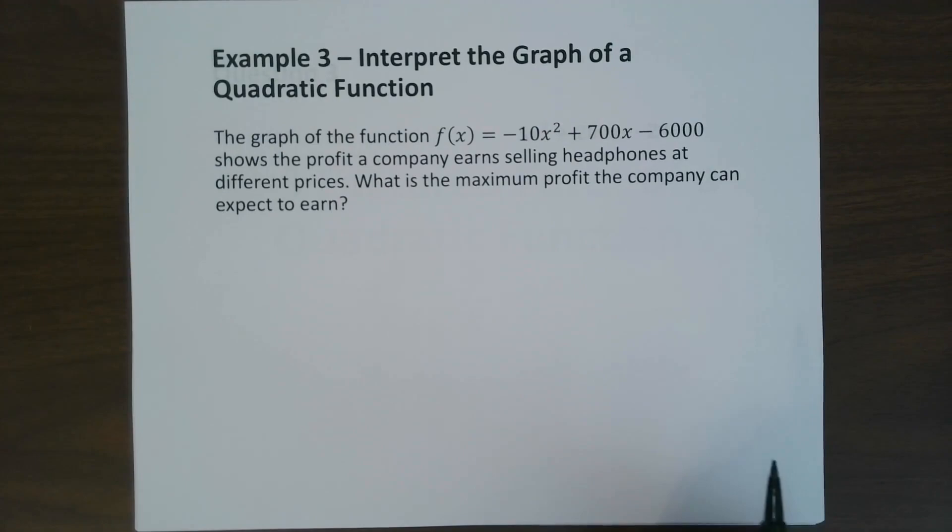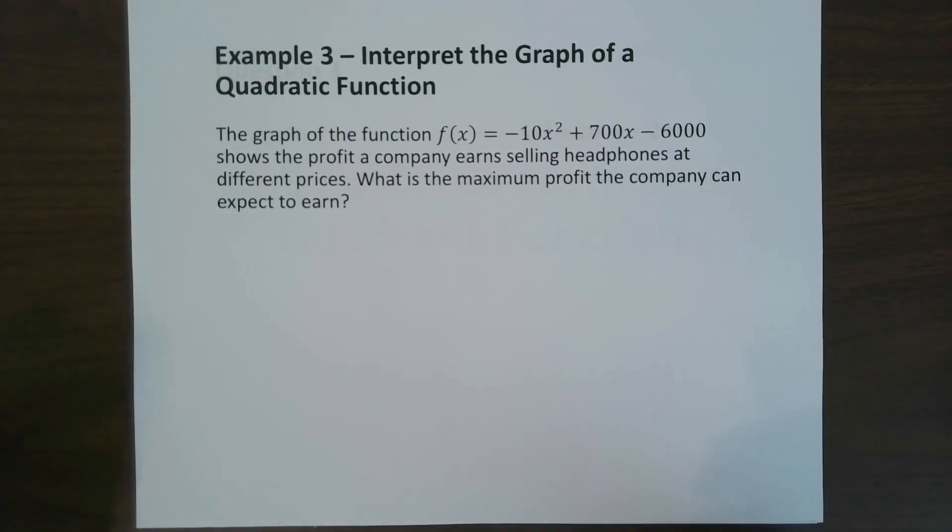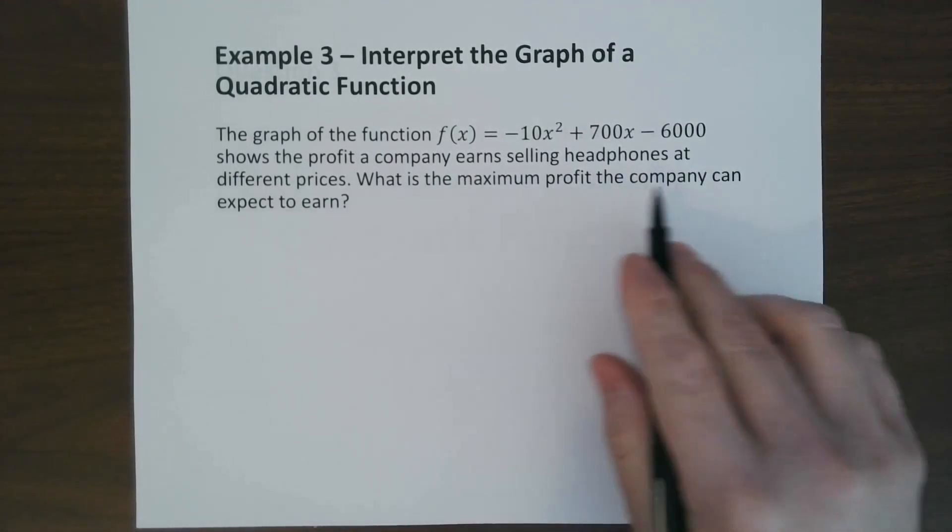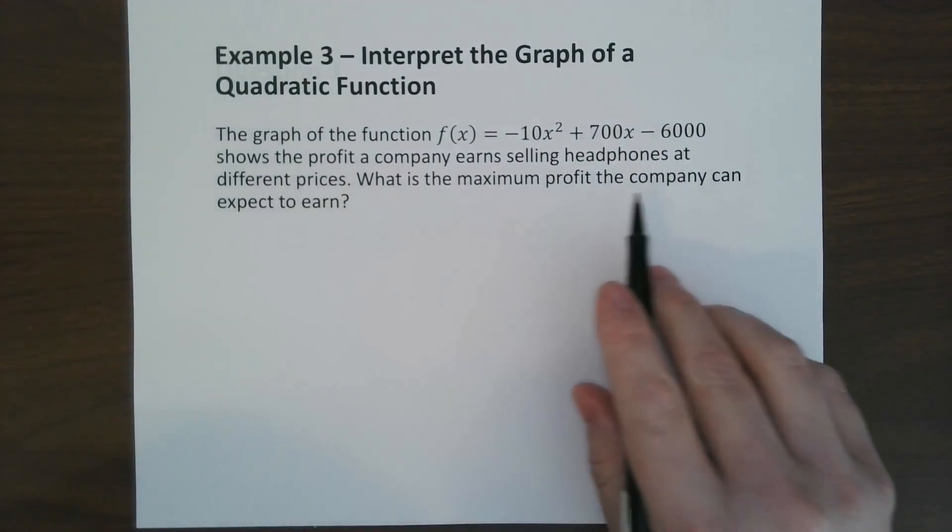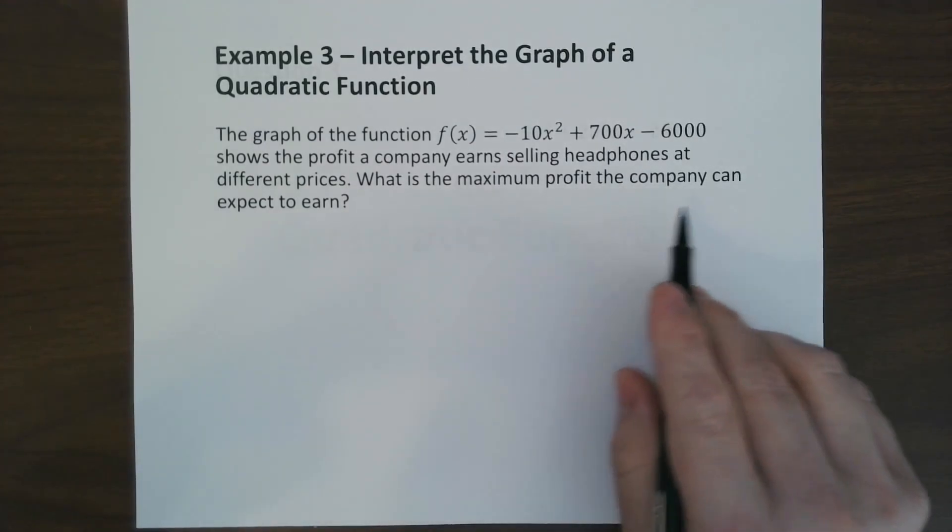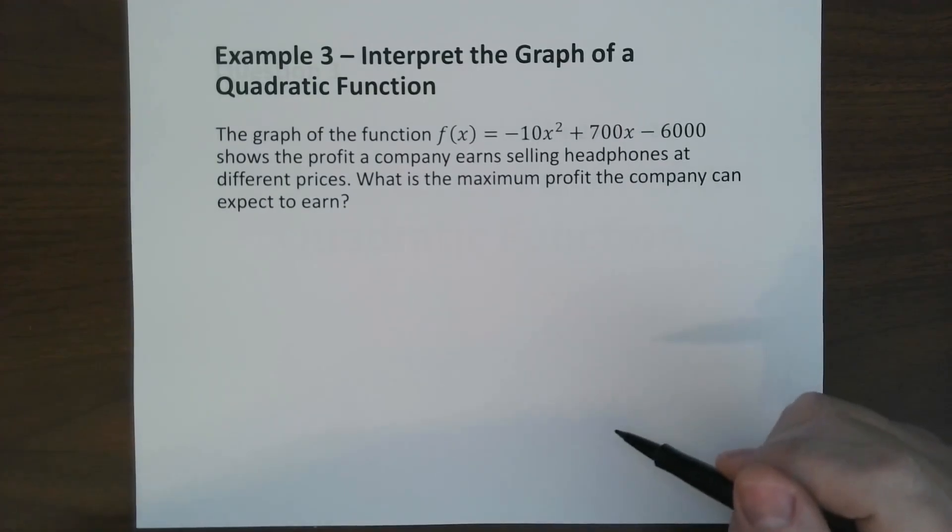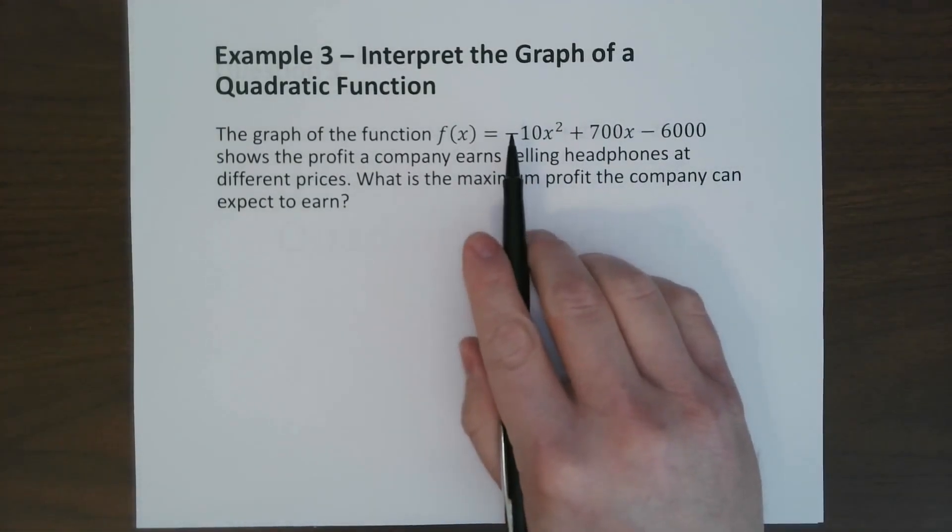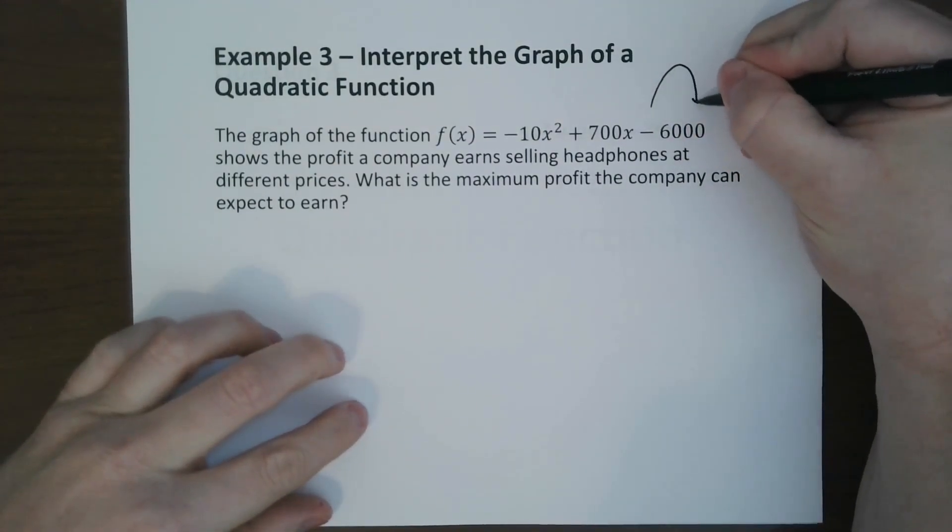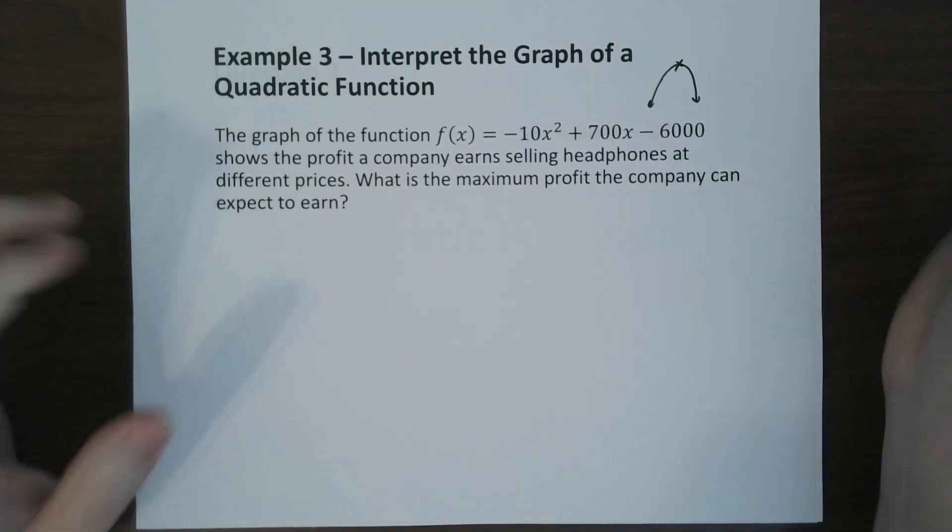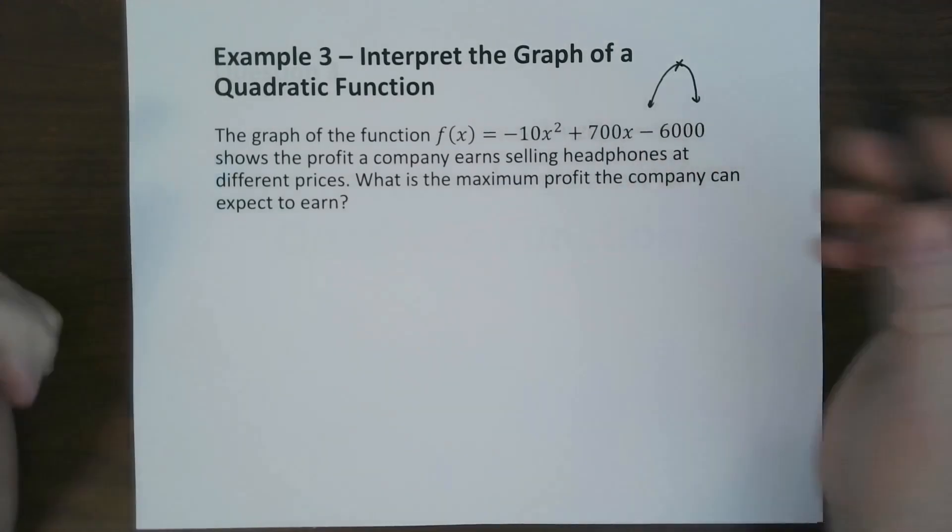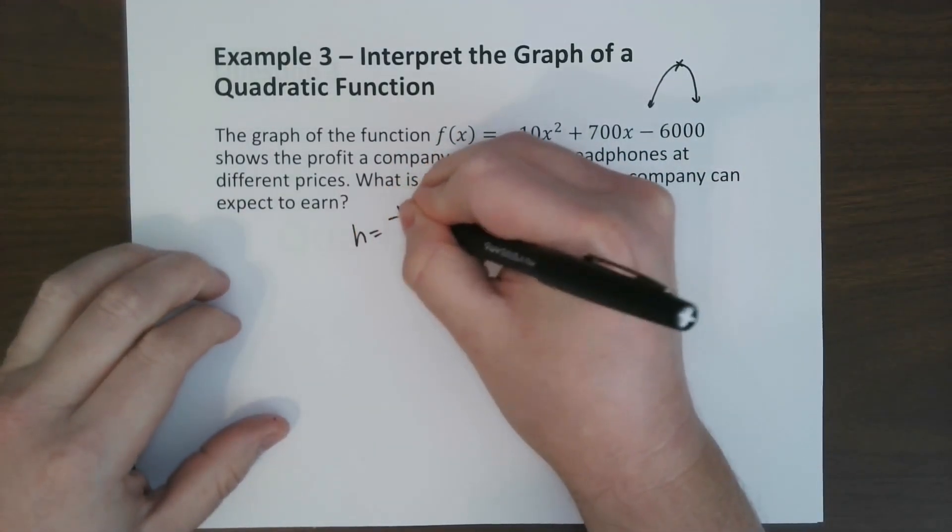Now we're going to interpret the graph of a quadratic function. So the way they use functions in real life is they use it to model data so they can make predictions and things like that. They pay people a lot of money to do that. So if we look at the graph of this, it shows the profit of earnings. But basically this function shows the profit a company earns selling headphones at different prices. What is the maximum profit that a company can expect to earn? So when we talk about maximum, we're talking about the vertex. Since this is negative, we know the graph starts low, tops out, and ends low. So what we got to do is find this part right here. If we can find that, then we can find the maximum profit. And the way we do that is we just use our h equals negative b over 2a.